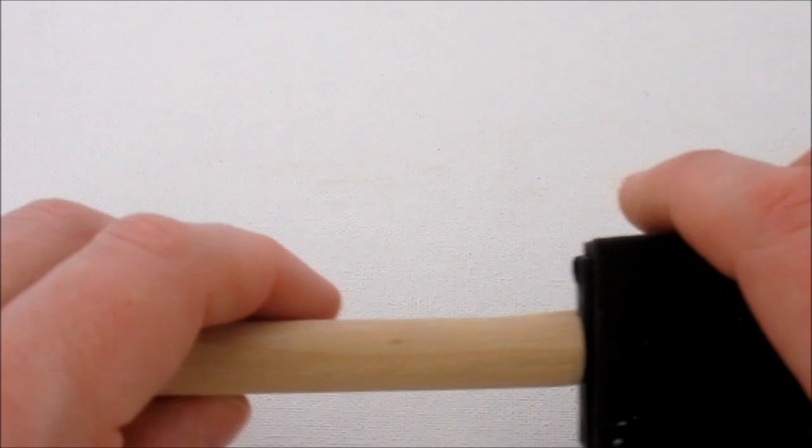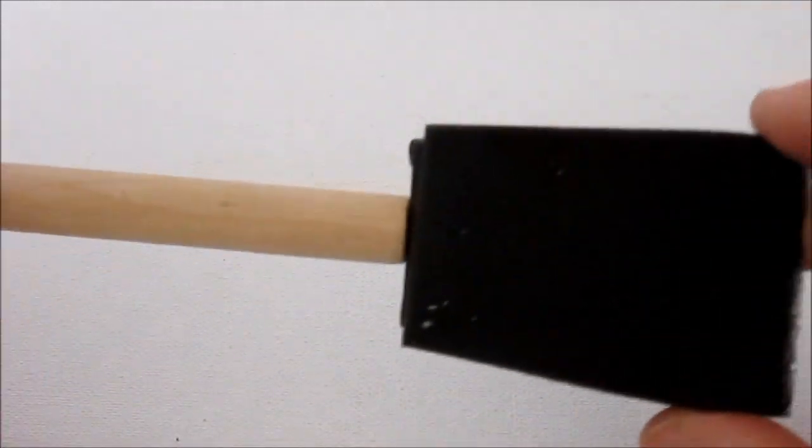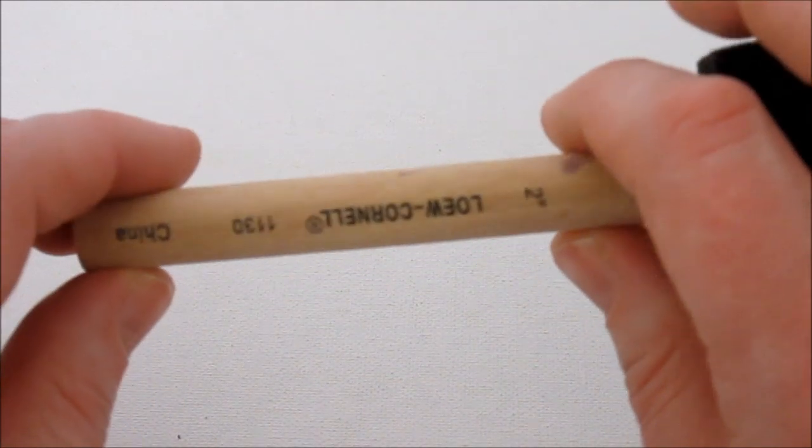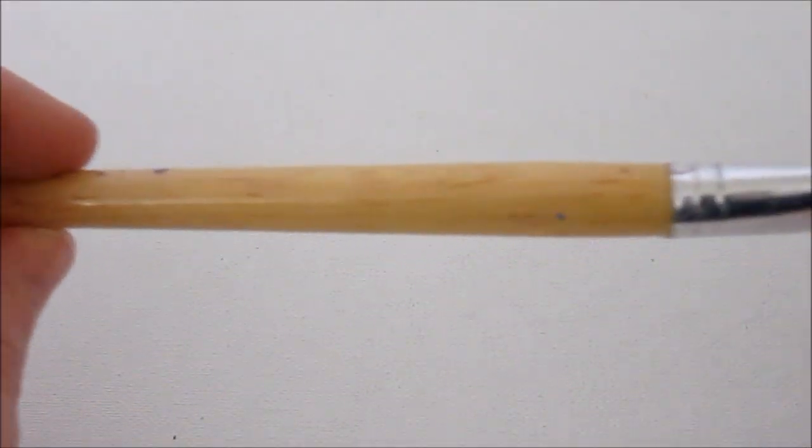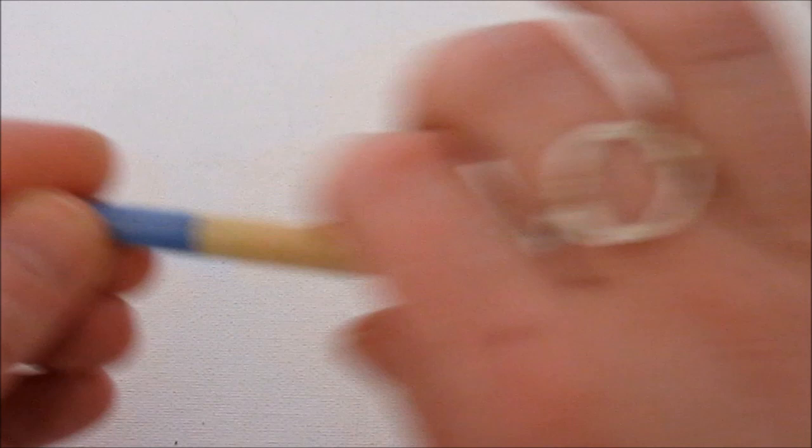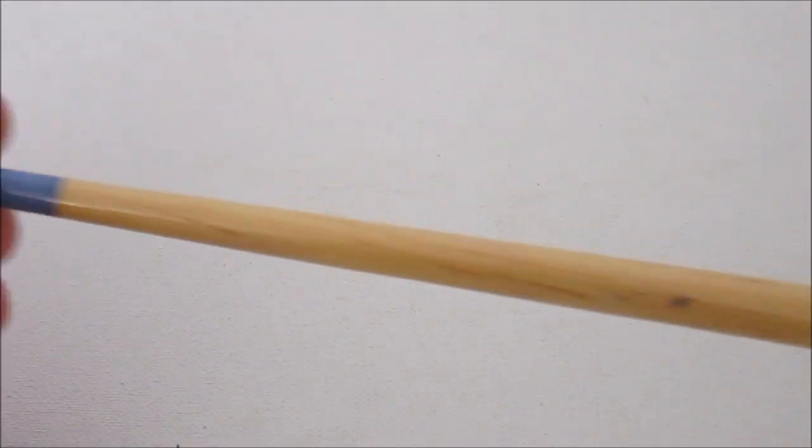Another idea I have are paintbrushes. This paintbrush is actually kind of thicker, and it would probably be very good for rings. This one is nice because it's thick, and it goes down to thinner. So you can just slide the ring right off when you're done making it. Any bigger paintbrushes you have to paint your house would be perfect too.